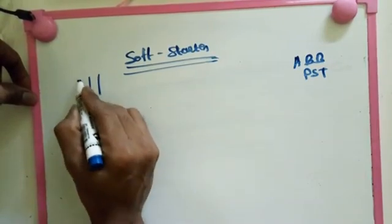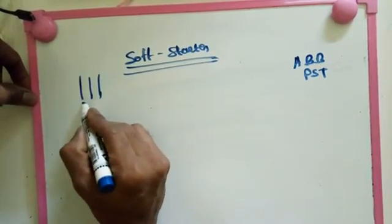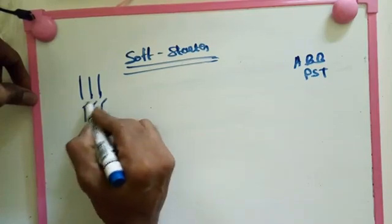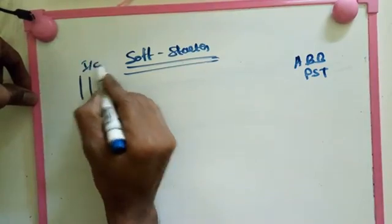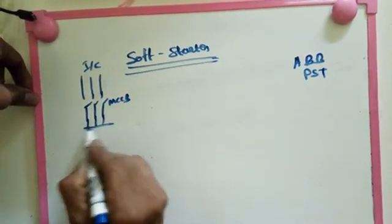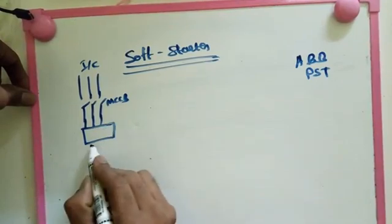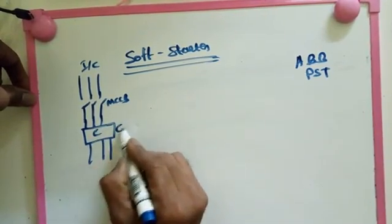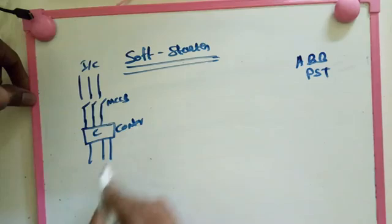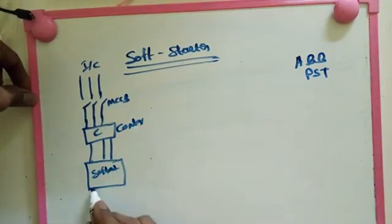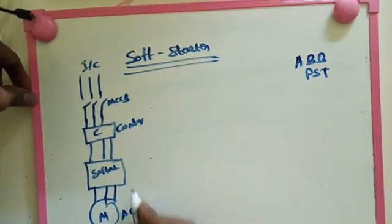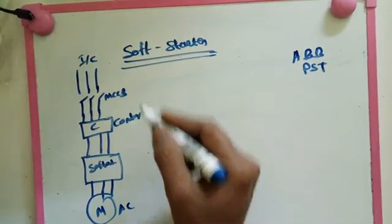We got 3-phase supply. Here we use some MCC build like that. Incoming supply. After that we use some contactor, C contactor. After that we put soft starter. After that only we give on to AC machine. So this is the simple power drawing of soft starter.